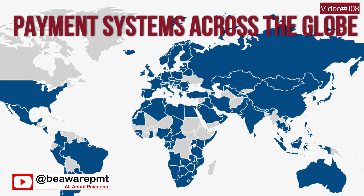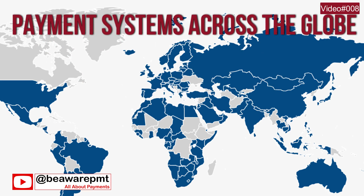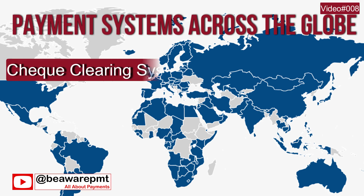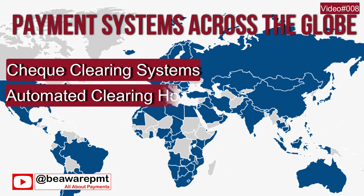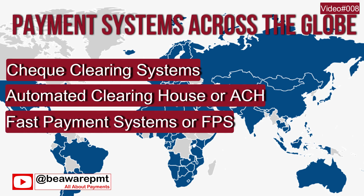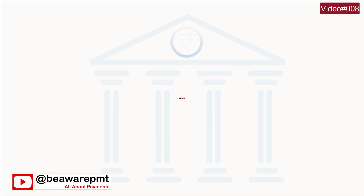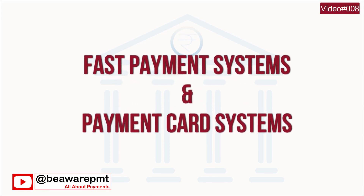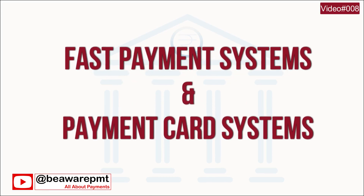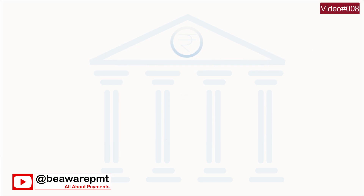Globally, there are multiple retail payment systems and instruments. These systems and instruments are designed and developed based on customer needs in the economy. Some of the global retail payment systems are: check clearing systems, automated clearing house (ACH), fast payment systems (FPS), and payment card systems.